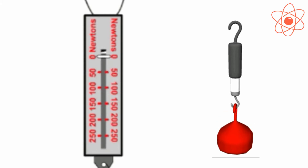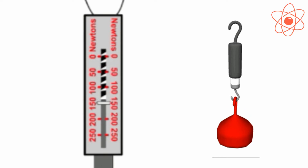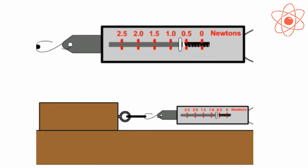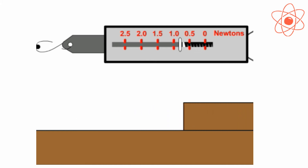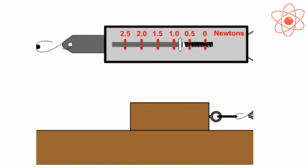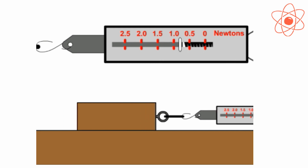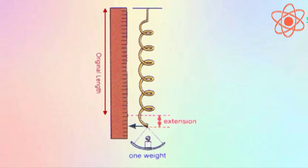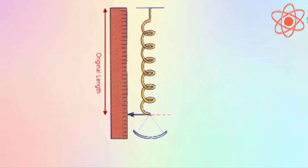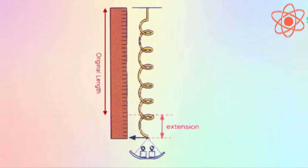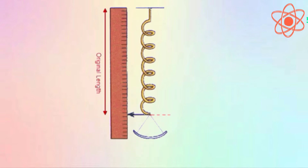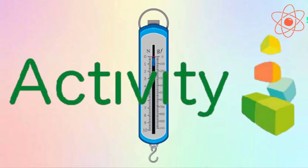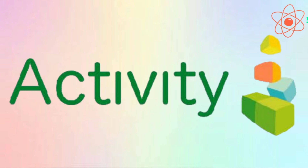The reading on the scale gives the magnitude of force. When the spring balance pulls the object horizontally on a surface, it gives the magnitude of force of friction. But when the spring balance is held vertically in the air, it shows the weight of the object and not the magnitude of friction.